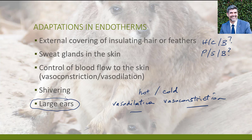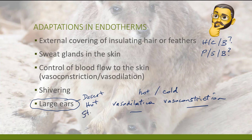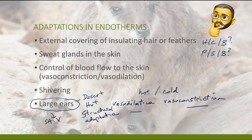Large ears are a particular adaptation often seen in desert animals, which means we're talking about hot environments. Large ears are a structural adaptation. If in addition there is regulation of blood flow to help with evaporative cooling, there might also be a physiological component. The fact of large ears links back to one of our central concepts in biology: surface area to volume. If you want to release heat quickly, a large surface area to volume ratio is a good idea; if you want to conserve heat, you want a smaller surface area to volume ratio.